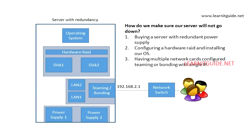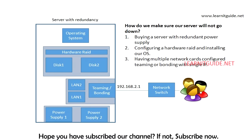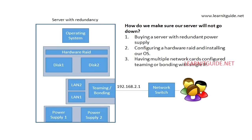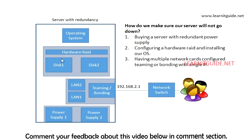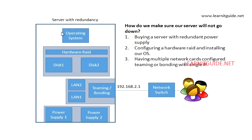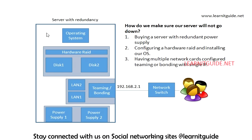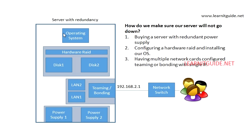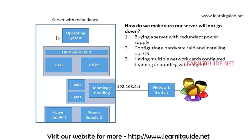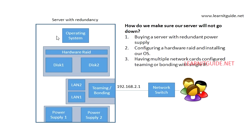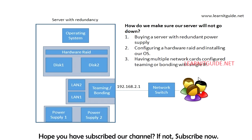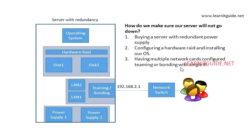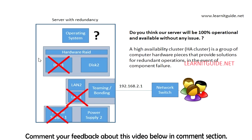Do you think our server will be 100% operational and available after making all hardware redundant? What about our operating system? Because the OS doesn't have redundancy — if something happens to the OS like a hang or kernel panic, the server will go down and services will not be available. This is where actual high availability comes into the picture.